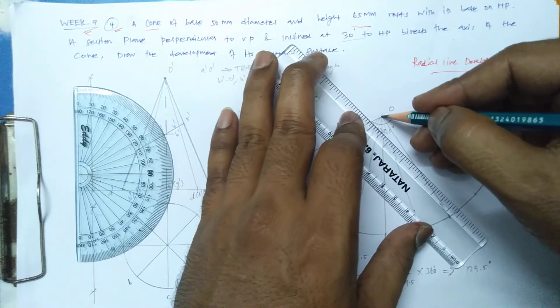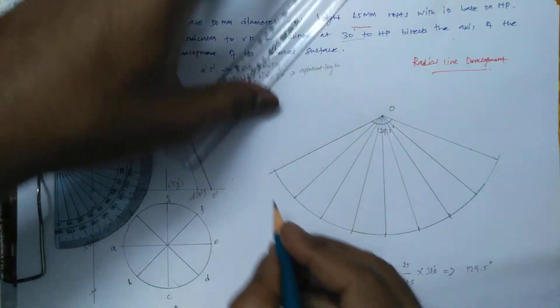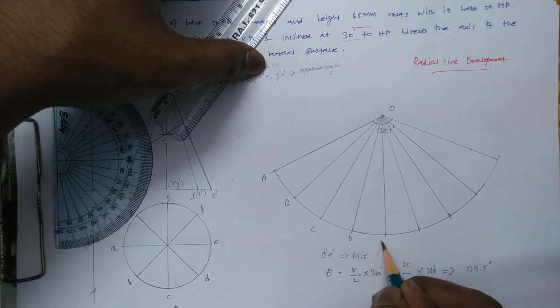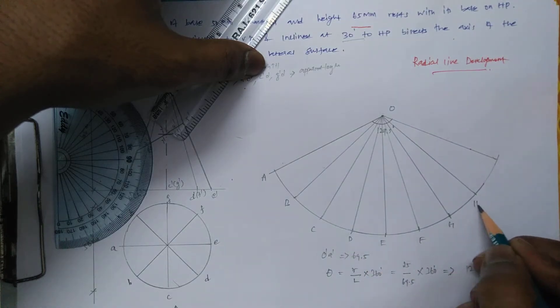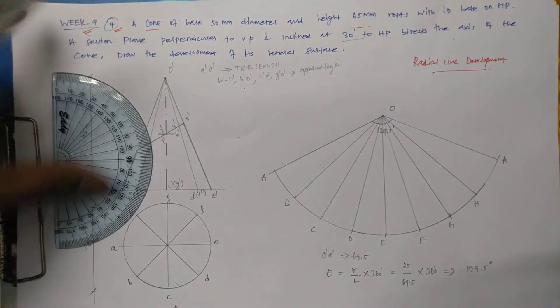Once you've connected, you can label A, B, C, D, E, F, G, H, again A.